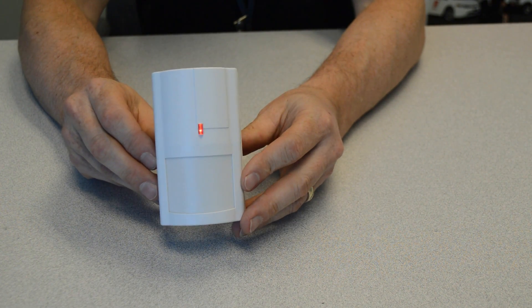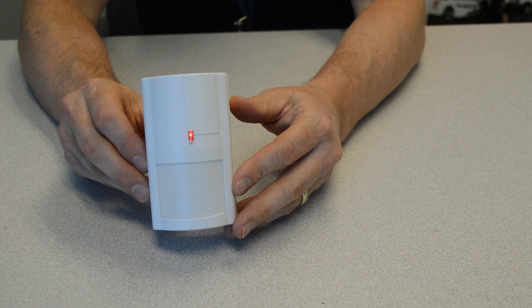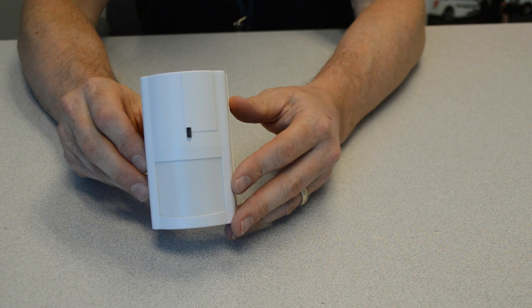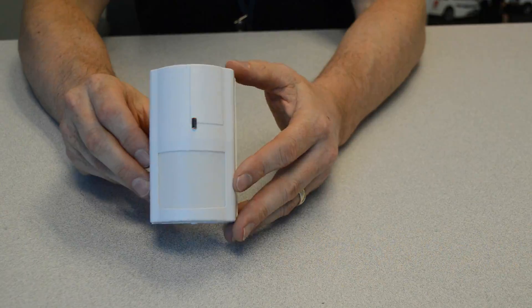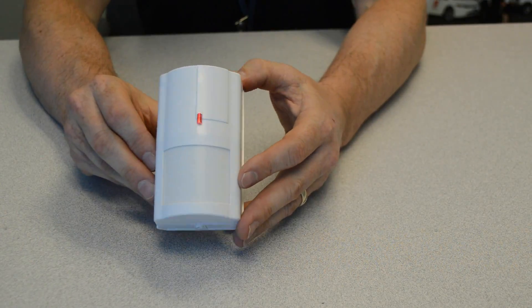Just check your keypad and make sure the trouble light is clear if you were showing a low battery indication on that device. And let the monitoring station know that you've finished testing your alarm and playing with the battery.